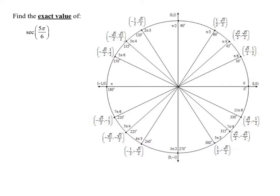So I need to write the secant in terms of sines and cosines. So remember, the secant is 1 over the cosine of 5π over 6.